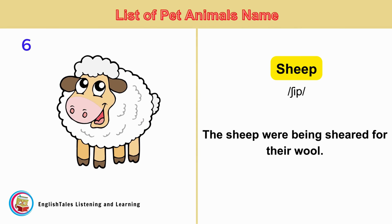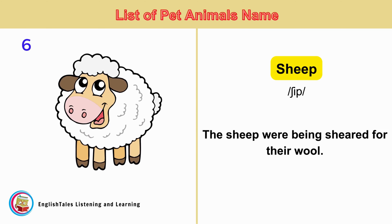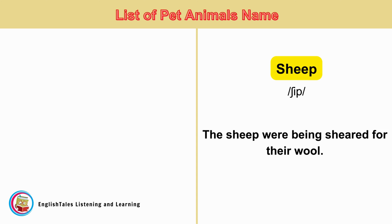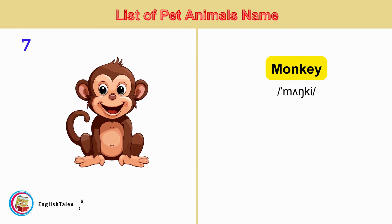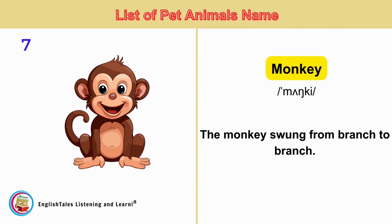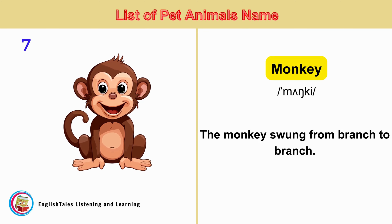Sheep. The sheep were being sheared for their wool. Monkey. The monkey swung from branch to branch.